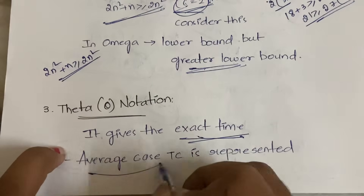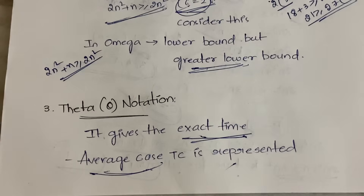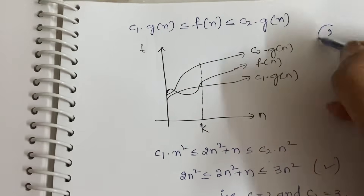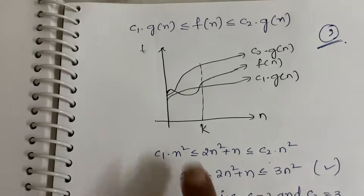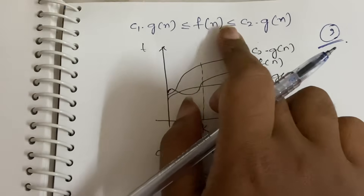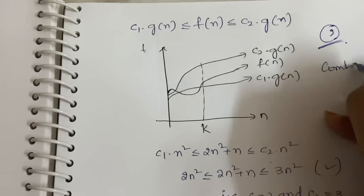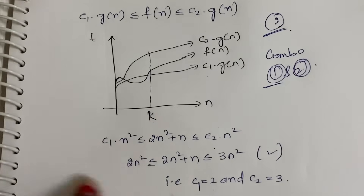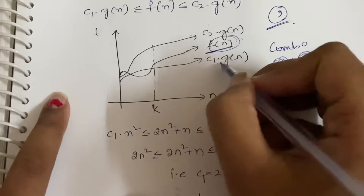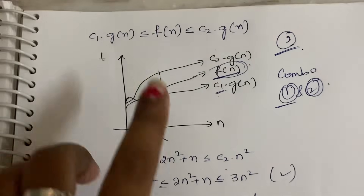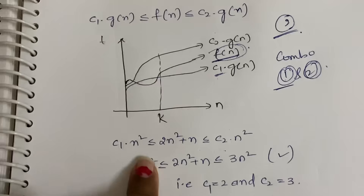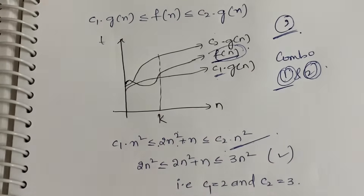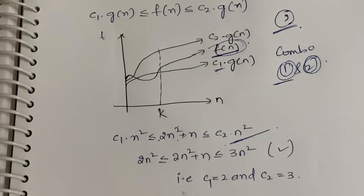Now let us look at Theta notation. Theta gives you the exact time because it considers the average case time complexity. The equation uses two constants c1 and c2: c1 · g(n) ≤ f(n) ≤ c2 · g(n). It is a combination of Big O and Omega. On the graph, f(n) lies between c1·g(n) and c2·g(n). With g(n) = n²: c1·n² ≤ 2n² + n ≤ c2·n².